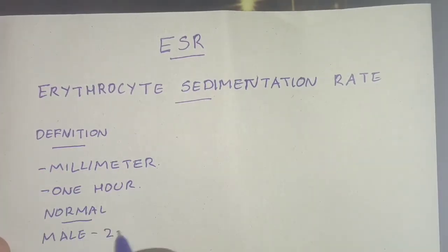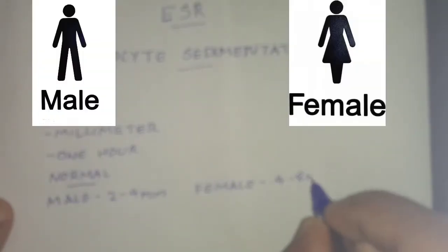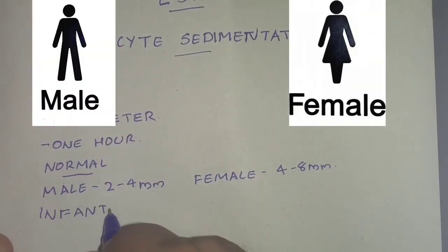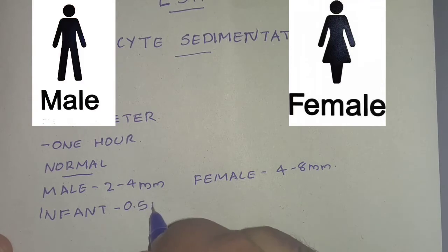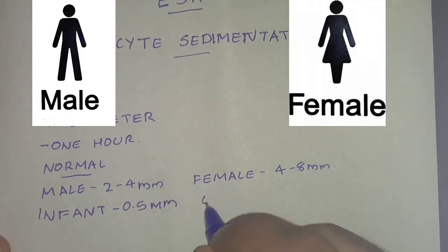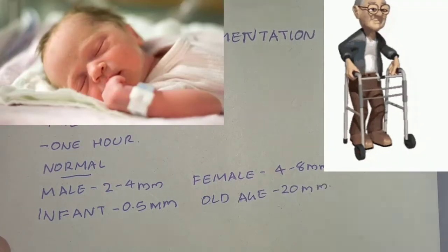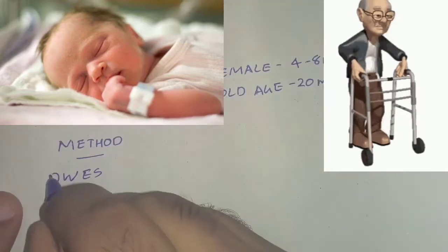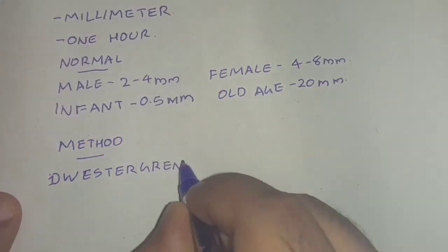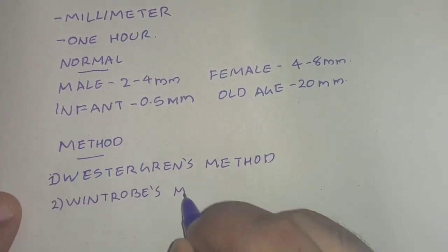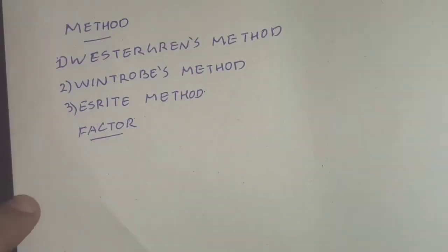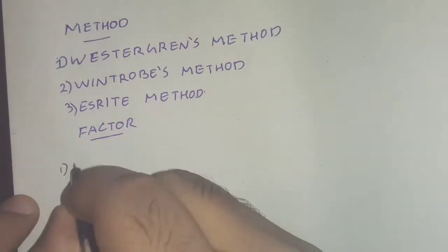The normal values of ESR: in males it is 2 to 4 mm in the first hour, in females it is 4 to 8 mm, in infants it is 0.5 mm, and in old age it is 20 mm. Methods of determination of ESR include the Westergren method, Wintrobe method, and a straight method.